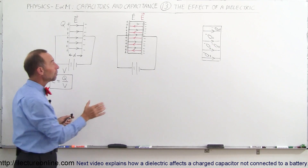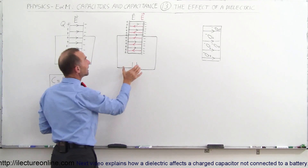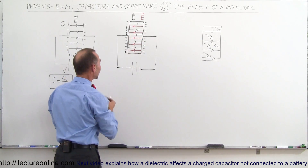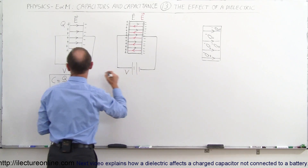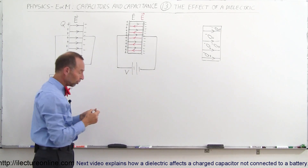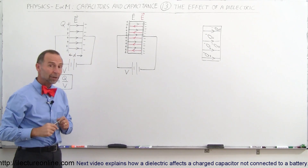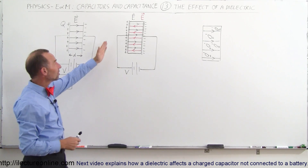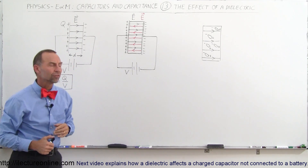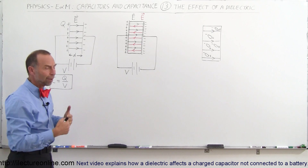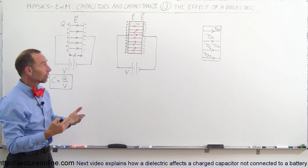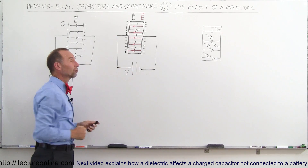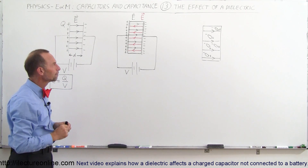What happens when we place a dielectric between the plates? We still have the same potential V pushing charge onto the plate, but two things happen. For one thing, more charge seems to be collected on the plates. The greater the dielectric constant of the dielectric, the more charge is pushed onto the plates. The question is why?